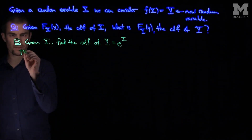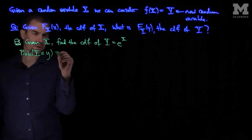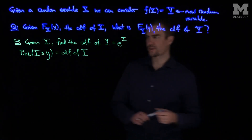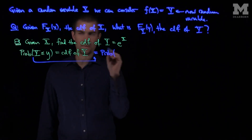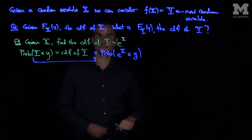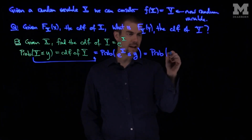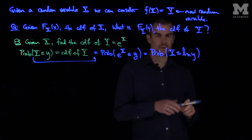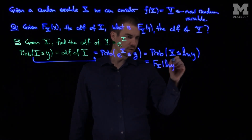What we'll do is consider the probability that the random variable Y is less than or equal to y, which is the CDF of Y. We can convert this: P(Y ≤ y) equals P(e^X ≤ y). To get X by itself, we take the log, so this becomes P(X ≤ ln y). We know what that probability is — it is F_X evaluated at ln(y), the CDF of X at the natural log of y.